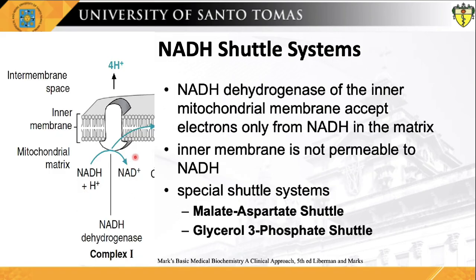The NADH dehydrogenase of the inner mitochondrial membrane of animal cells can accept electrons only from NADH in the matrix. Since the inner membrane is not permeable to NADH, special shuttle systems carry reducing equivalents from cytosolic NADH into mitochondria by an indirect route. These are the malate-aspartate and glycerol-3-phosphate shuttle systems. Special shuttle systems exist for this purpose of NADH transport through the impermeable inner mitochondrial membrane.